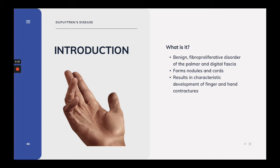Dupuytren's disease is a benign fibro-proliferative disorder of the palmar and digital fascia. It is a progressive disease that afflicts primarily the hands with the development of pathologic tissue that originates from existing normal palmar fascial structures. This results in the formation of nodules and cords that will ultimately develop into characteristic contractures seen in the photo here.